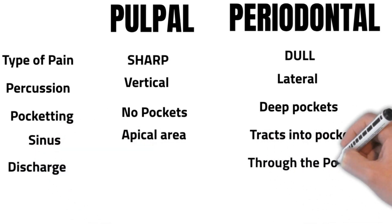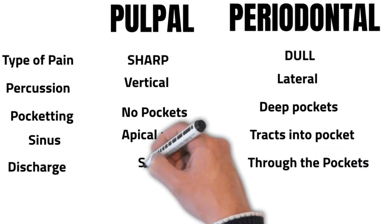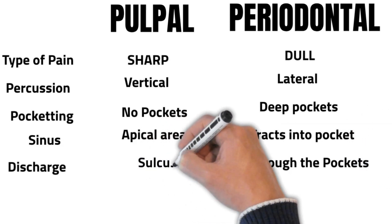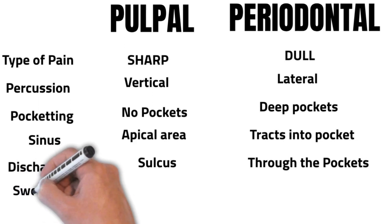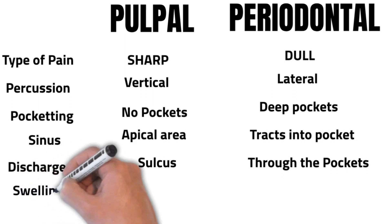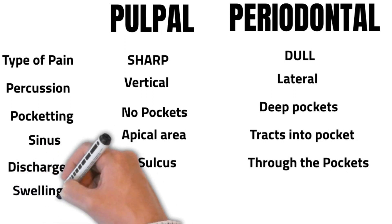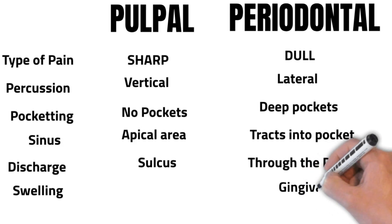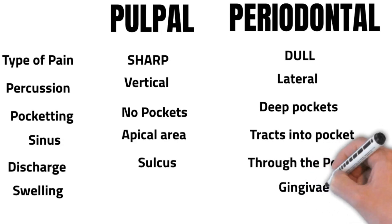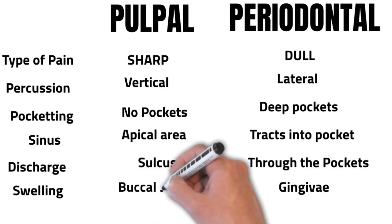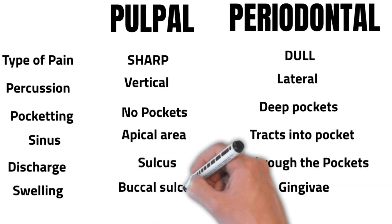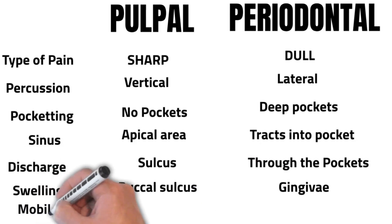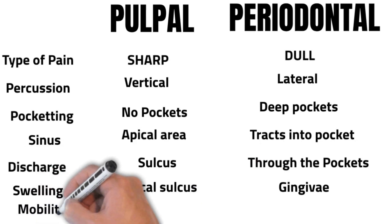You can get discharge occurring through the pockets with periodontal pathology, whereas with pulpal pathology it's usually tender around the apex. Swelling occurs around the gingiva in periodontal pathology, whereas swelling can occur in the buccal sulcus in pulpal pathology.